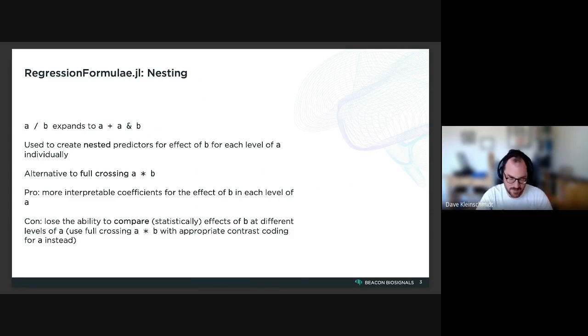So a / b expands to a + a:b. The way that interaction terms are expanded in the StatsModels formula DSL means that this ends up creating nested predictors for the effect of b or the slope of b at each individual level of the a predictor.